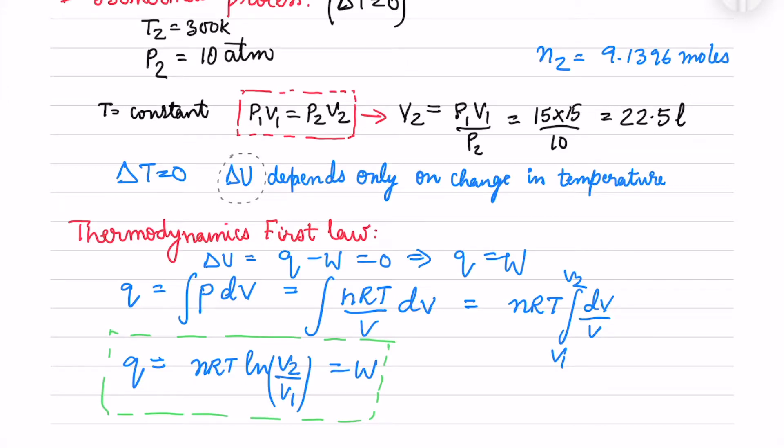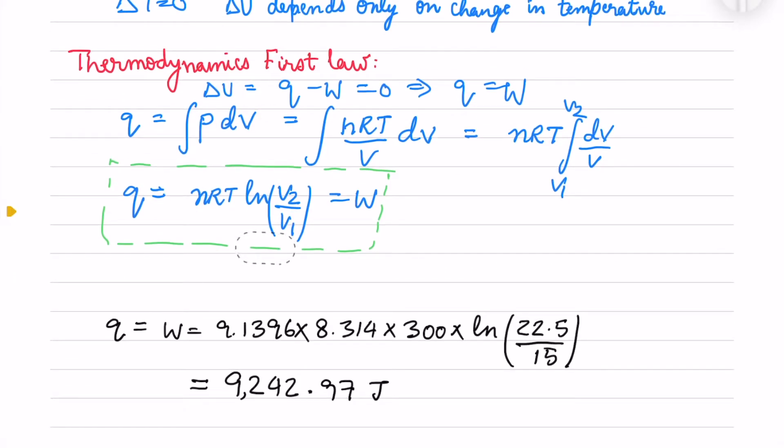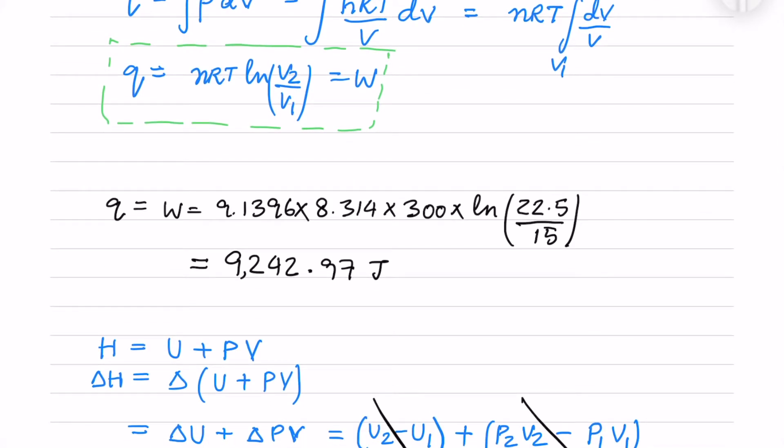Delta U depends only on temperature. From the first law of thermodynamics, delta U equals Q minus W equals 0. So Q equals W. We know Q equals integral PdV, and substituting P = nRT/V, we integrate dV/V. This equals nRT, and since temperature is constant, we take n and R outside as constants. We get Q = nRT ln(V2/V1), which equals work done. Inserting numerical values, heat equals 9242.97 joules.